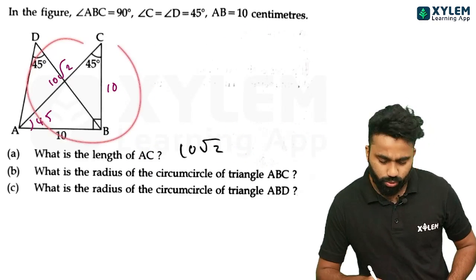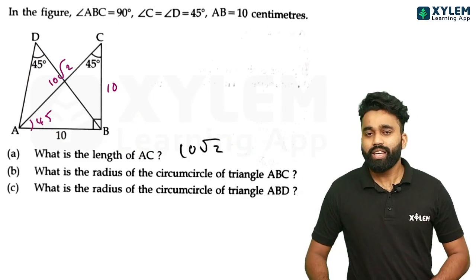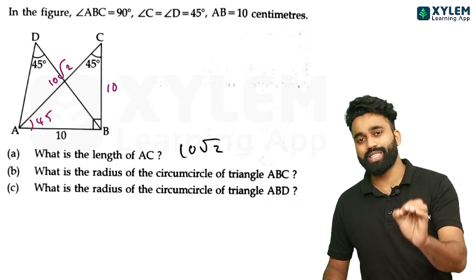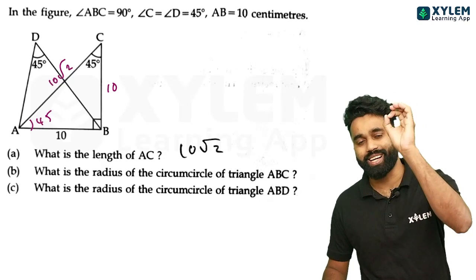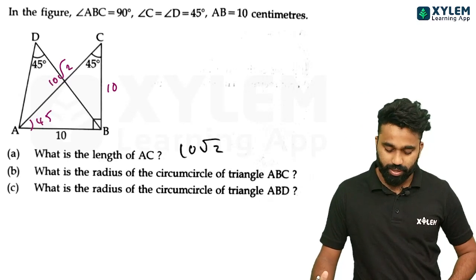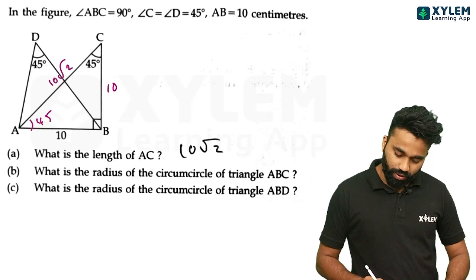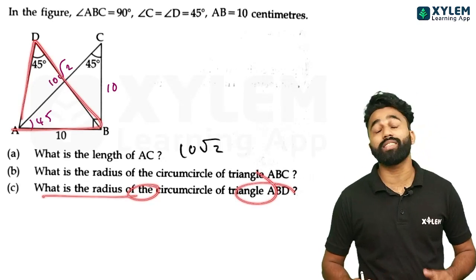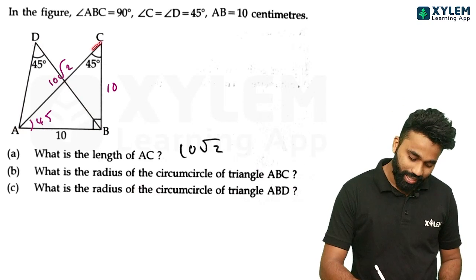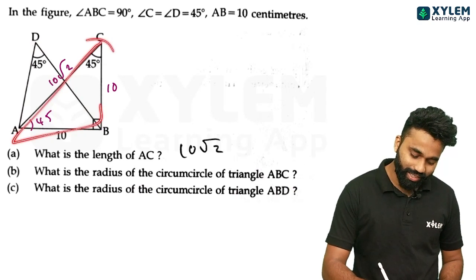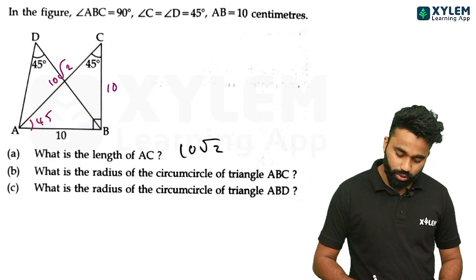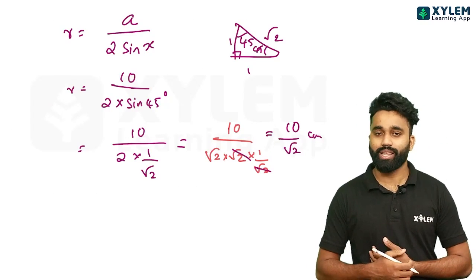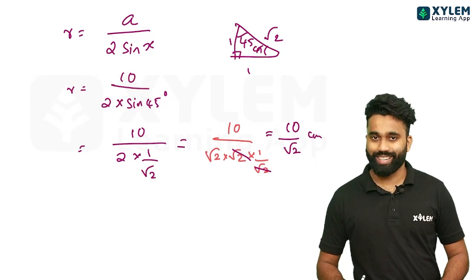We have to write a very short answer. If you want to discuss these questions, then you will discuss these questions. What is the radius of the circumcircle of triangle ABD? It is the same. What is the mark? The answer is 4 marks.